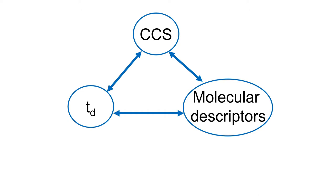When I think in terms of ion mobility, I visualize a triangle where each vertex is represented by: the drift time of the analyte, the molecular descriptors, and the CCS. The challenge has always been finding a relation between these three elements. We could obtain drift time values from molecular descriptors through the mobility constant, where descriptors of shape and size carry higher weight. Or we can try to obtain CCS values from molecular descriptors, or alternatively obtain CCS indirectly via empirical measurements of drift times.